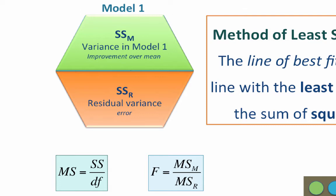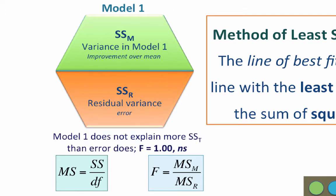So if the sum of squares for the model (SSM) is the same size as the sum of squares residual (SSR), then you divide two equal things and end up with a value of 1. That would mean your model does not explain more of the total variance than error does. Your ANOVA will equal 1 and be non-significant — you might as well have used the mean for prediction, because your predictors did not improve the predictive model.